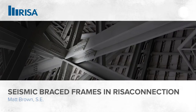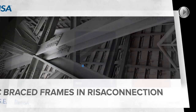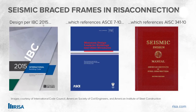Hello, and welcome to today's presentation on Seismic Braced Frames in RISA Connection. I'm Matt Brown, and today I'm going to be explaining how you can get the design of braced frames for seismic areas using RISA Connection. Today's design is going to be done per IBC 2015, which references ASCE 7-10 — that's where we get things like our R values and which seismic systems are allowed for which conditions. ASCE 7-10 then references AISC 341, also known as the Seismic Design Manual, and that's where we get all the provisions specific to how we design the connections, braces, and columns.